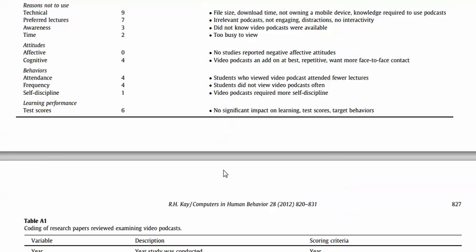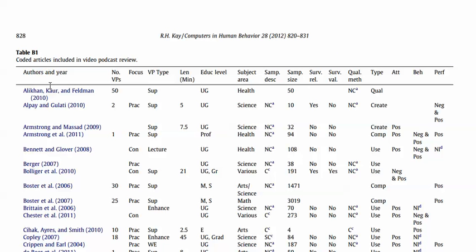Those articles are summarized in the table in Appendix B, which includes the author, the number, the focus, and VP type. There's a matching between these labels and what was produced in Appendix B — that's how you looked at the articles.